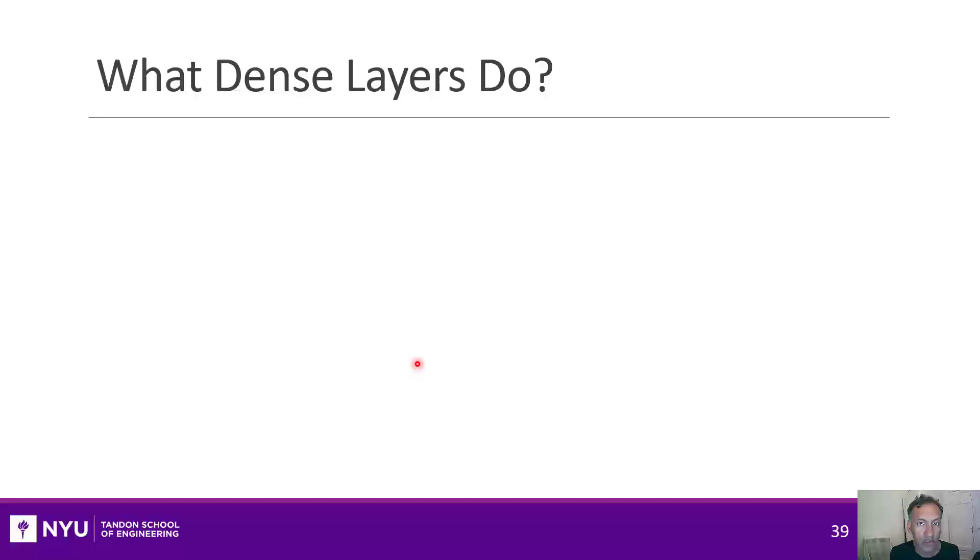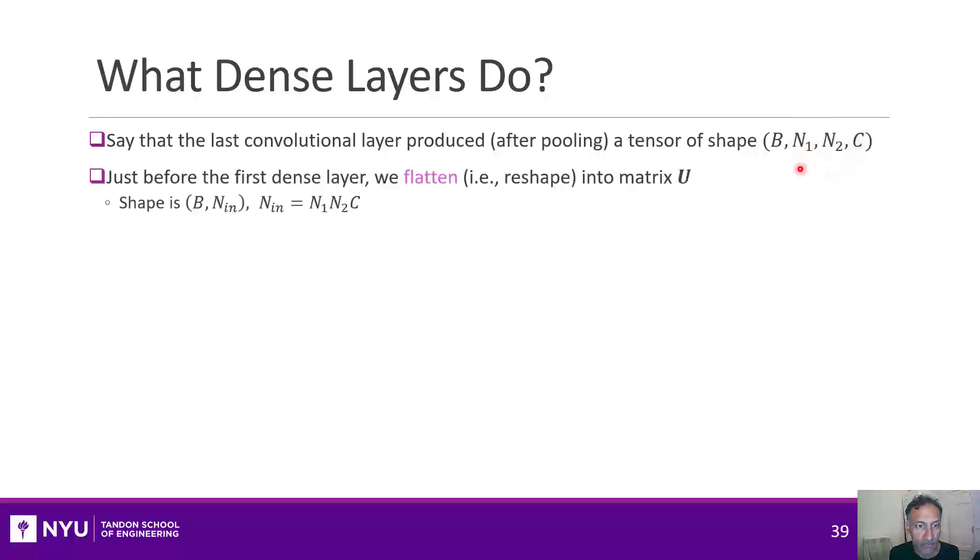All right, now we've seen a little bit of what convolutional layers do. Let's go over to dense layers. So say that the last convolutional layer is of size B, which is the batch, and it's N1 and N2 for the size of each image and that's C channels. What you typically do is you first flatten it.